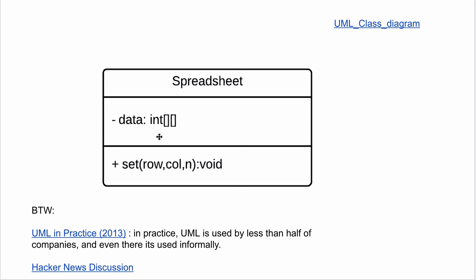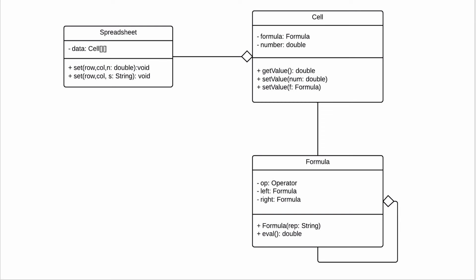You iterate: take another piece of paper and draw something new. Your spreadsheet is really going to be a two-dimensional array of cells. You start naming things and realize you'll need to set things not just as a double but also as a string — which represents a formula. So you need two set functions.